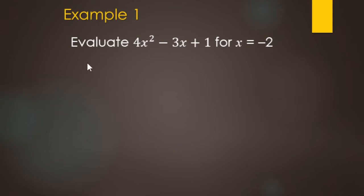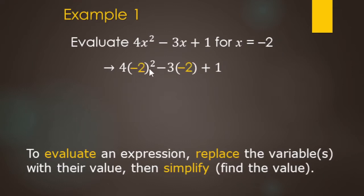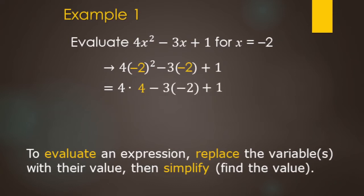Let's evaluate 4x² minus 3x plus 1 for when x equals negative 2. When we say evaluate, we replace the variable with its value — negative 2 in this case — and then simplify using order of operations. So 4x² becomes 4 times negative 2 squared, and minus 3x becomes minus 3 times negative 2. No grouping symbols here, so these parentheses indicate multiplication. First up: exponents. Negative 2 squared is negative 2 times negative 2 — negative times negative is positive, 2 times 2 is 4. So we have 4 times 4, minus 3 times negative 2, plus 1.